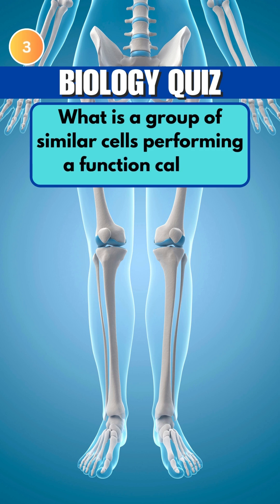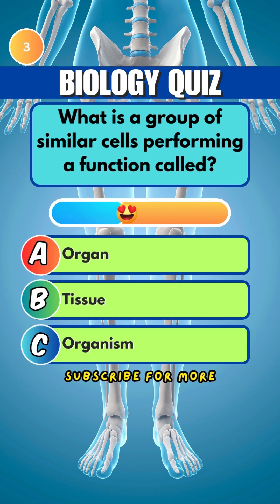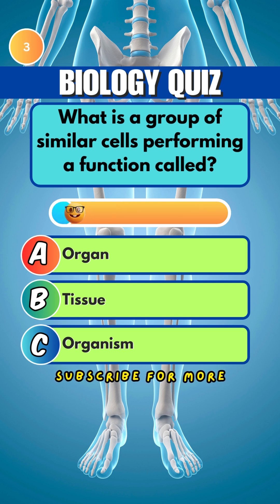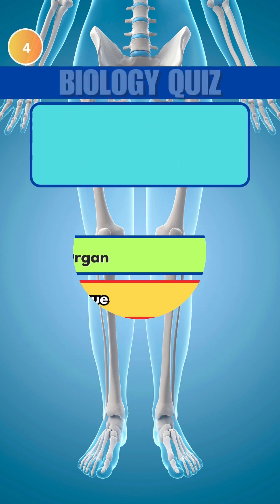What is a group of similar cells performing a function called? Answer: B. Tissue.